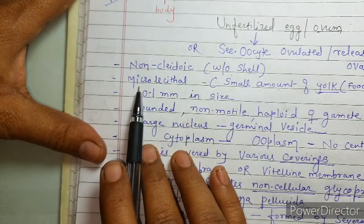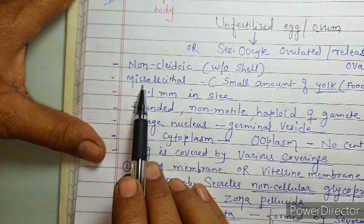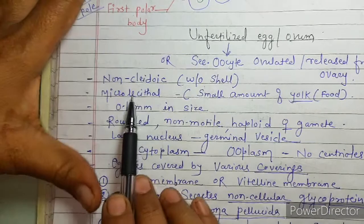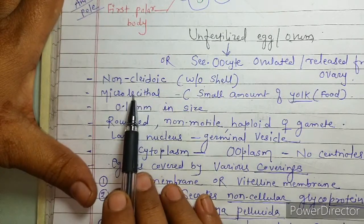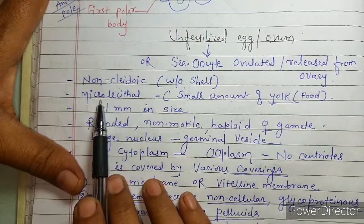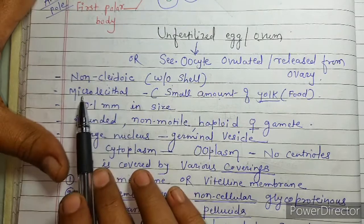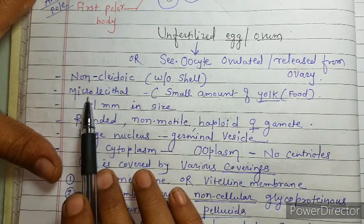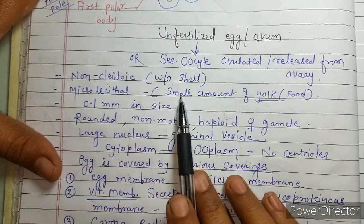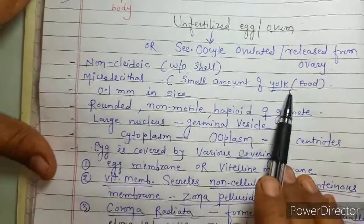Second point: the egg is called as microlecithal. So why is the human egg called microlecithal? Because there is a small amount of yolk, that is a small amount of food material, in the egg.